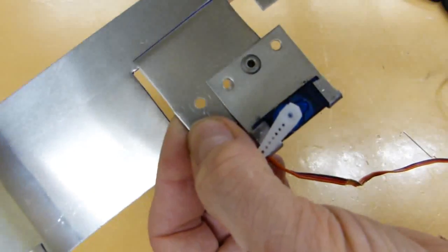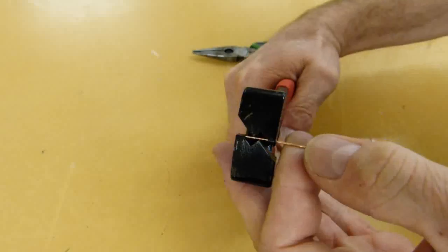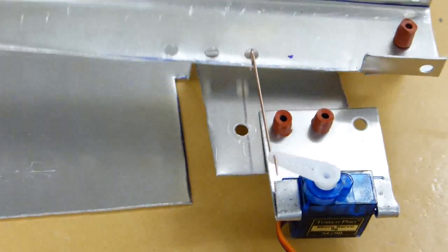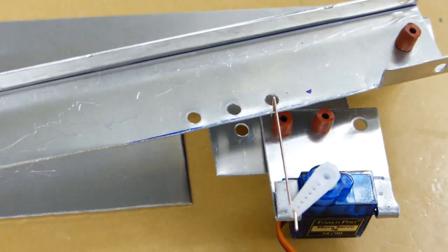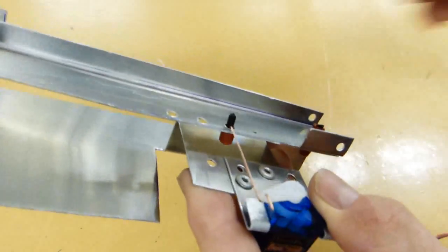To connect your servo to the arm, make a small linkage from wire using Z-Bend pliers. There is a lot of slack, or play, in this connection here. Play is bad for precision, but there are usually ways to reduce it to a minimum.